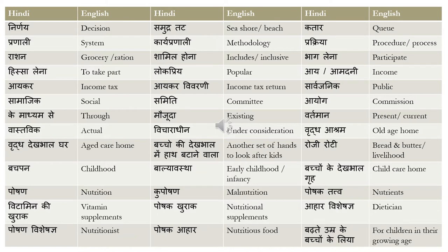'Poshan' means nutrition. 'Kuposhan' means malnutrition. 'Poshak sattva' means nutrients. 'Vitamin ki khurak' means vitamin supplements — supplements are 'khurak'. 'Poshak khurak' means nutritional supplements. 'Ahar visheshagya' is a dietitian and 'poshan visheshagya' is a nutritionist — make sure you note the difference. 'Poshak ahar' means nutritious food, for example 'poshak ahar badhate umr ke bachon ke liye' — nutritious food for children in their growing age.